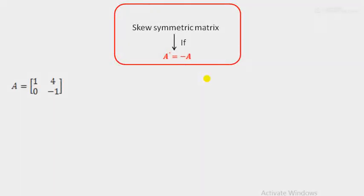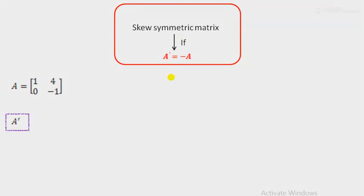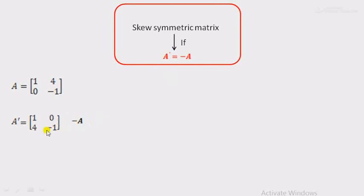Consider a matrix A — we need to check whether it is a skew symmetric matrix or not. The definition of a skew symmetric matrix is A' equal to minus A. Therefore, first we have to find out the value of A', then we have to find out the value of minus A.